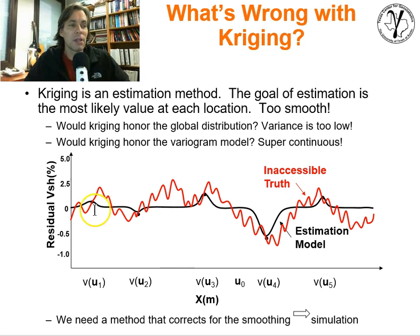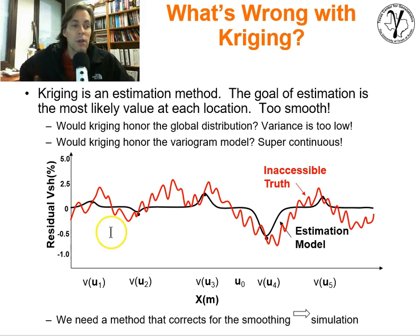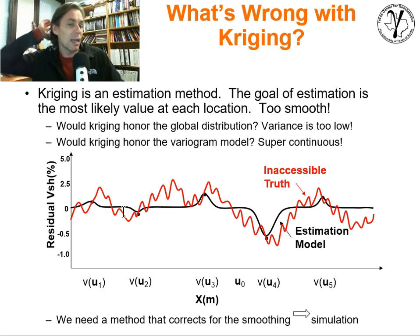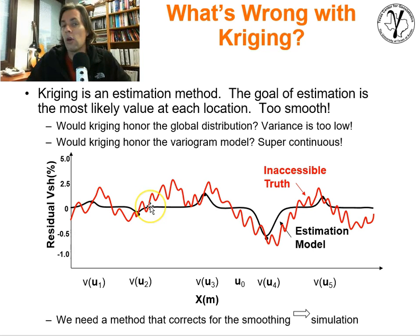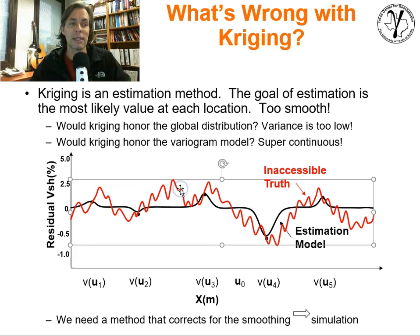Let's take a very simple example. We have a residual V-shale — we've detrended this V-shale or fraction-of-shale variable — and the black line represents a kriging estimation. The data dots represent the data values. It's a one-dimensional example just for illustration. We've got data at one, two, three, four, and five locations. The kriging estimates are going to be at the data locations, and at distances greater than the range we go to the global mean. That's simple kriging.